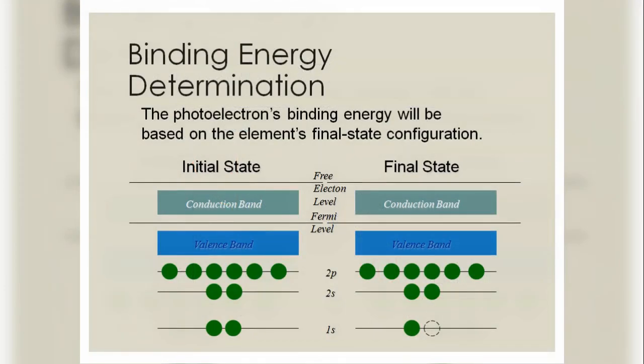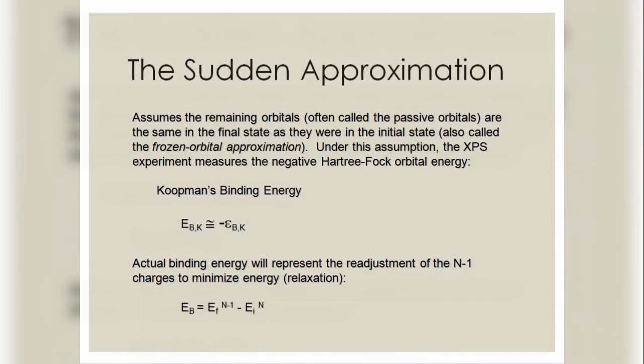So the binding energy determination. The photoelectron's binding energy will be based on the element's final state configuration, initial and final state. The sudden approximation and Koopman's binding energy: E(BK) ≈ -σ(K).